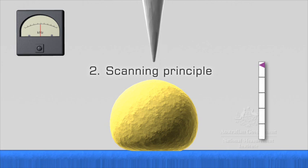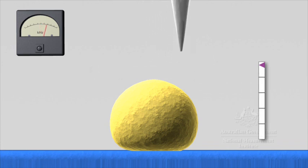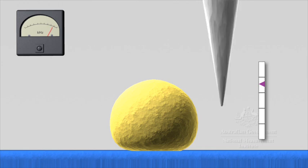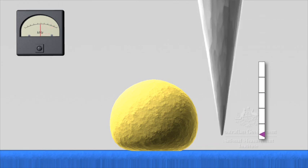2. Scanning Principle. If the tip is scanned across the sample, the tip height is adjusted by feedback to keep the cantilever vibration at the set point and the distance between the tip and the sample constant.